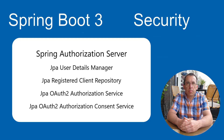In this video we are going to extend the Spring Authorization Server. All the data comes from a database in this project. We are going to create and configure the following beans: the JPA User Details Manager, the JPA Registered Client Repository, the JPA OAuth 2 Authorization Service, and the JPA OAuth 2 Authorization Consent Service. We will start with a new project, first go over the code, then implement the database connections step by step.